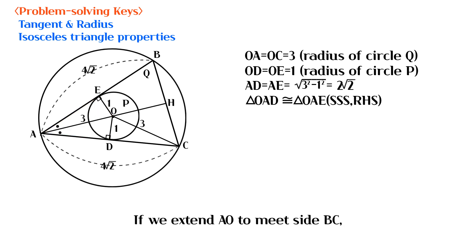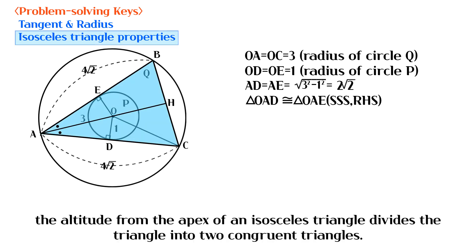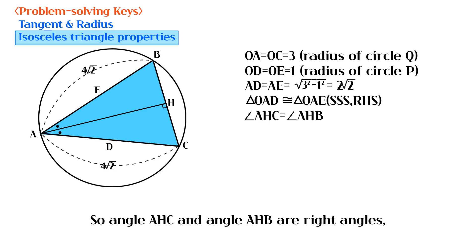If we extend AO to meet side BC, the altitude from the apex of an isosceles triangle divides the triangle into two congruent triangles. So angle AHC and angle AHB are right angles, and the lengths of CH and BH are the same.